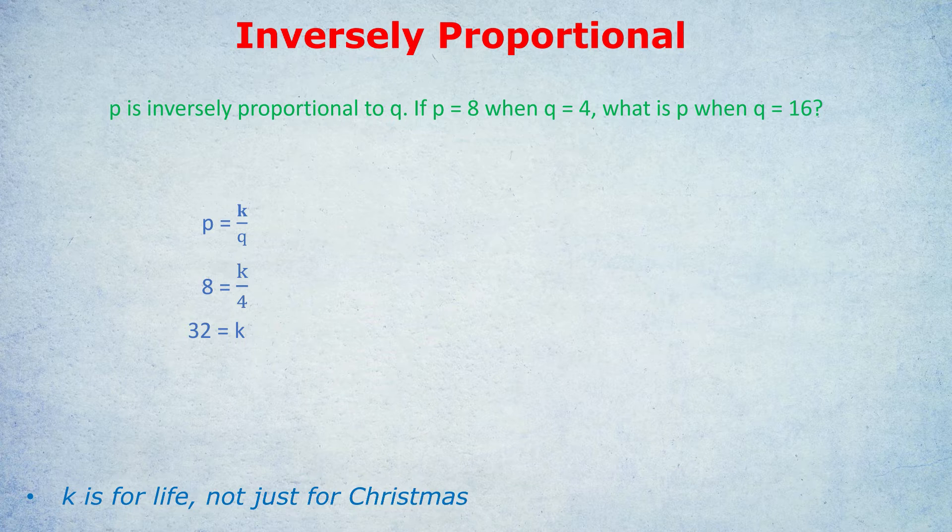So don't keep the equation P equals K over Q. Rewrite the equation. This is probably the step that most students forget about. They think they've worked out K, job done. No, you've got to rewrite the equation with our value of K permanently written as 32 now: P equals 32 over Q. Finally, we have one of the values now, which is Q being 16, so we will replace the Q with 16, keeping that 32. 32 divided by 16 is 2, so P is 2.